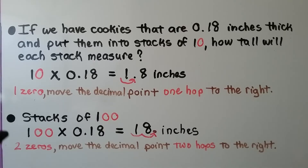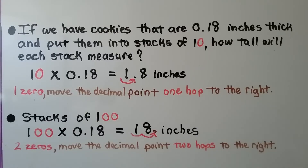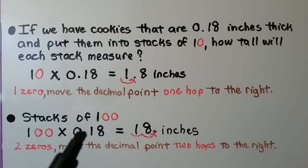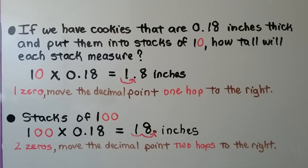If we put them into stacks of 100, we have 100 times 18 hundredths. We have two zeros, so we're going to move the decimal point two hops to the right. It's here — we're going to move it one, two hops to the right. We'll have 18 inches for each stack.